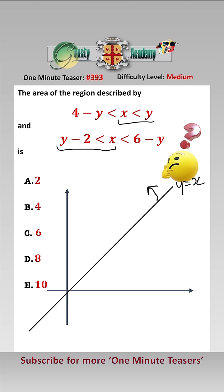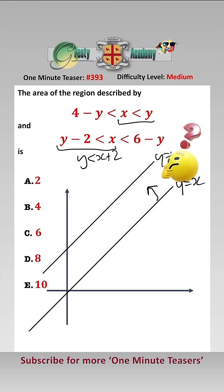Now let's have a look at x greater than y minus 2. We can rewrite that as y is less than x plus 2, so let's draw in y equals x plus 2 — that's y equals x plus 2 — and so therefore it must be this side of that.